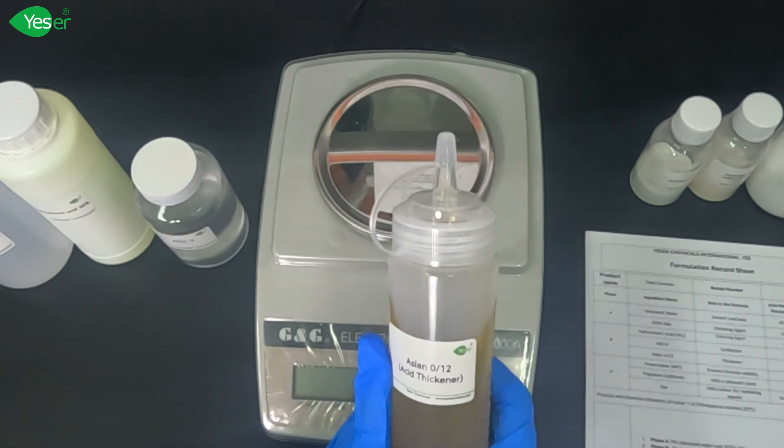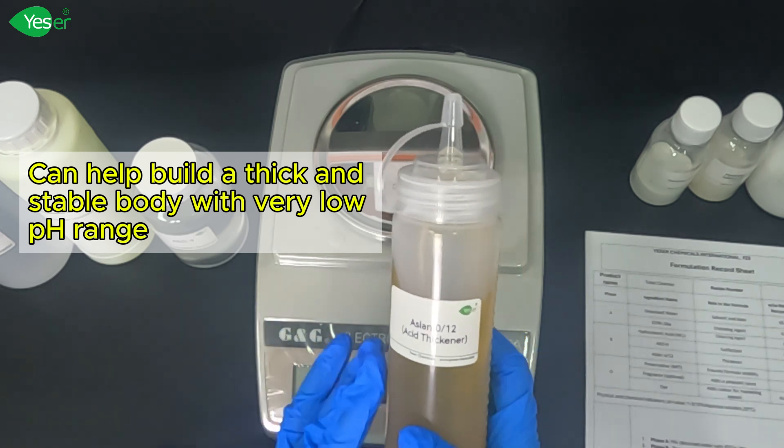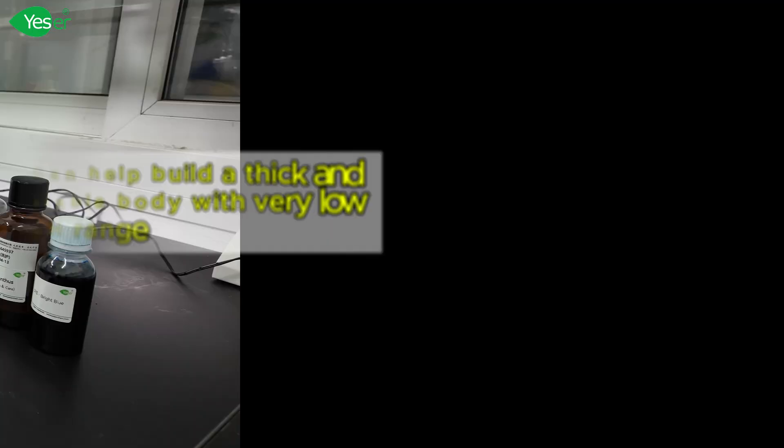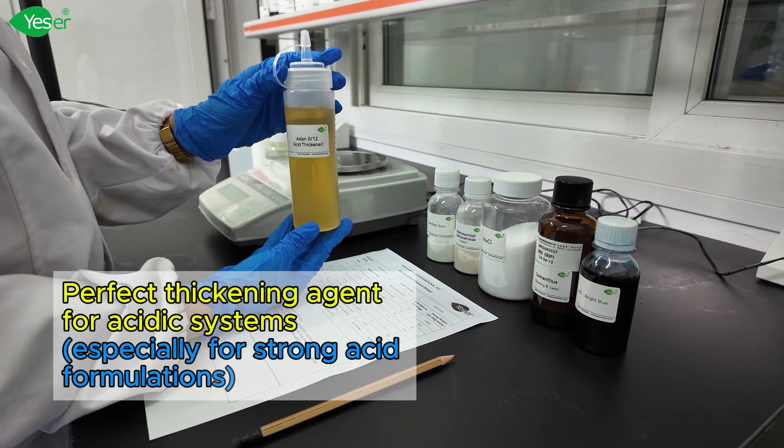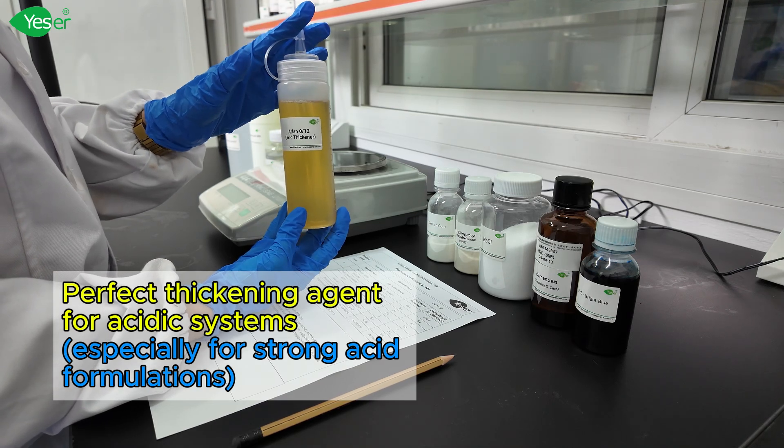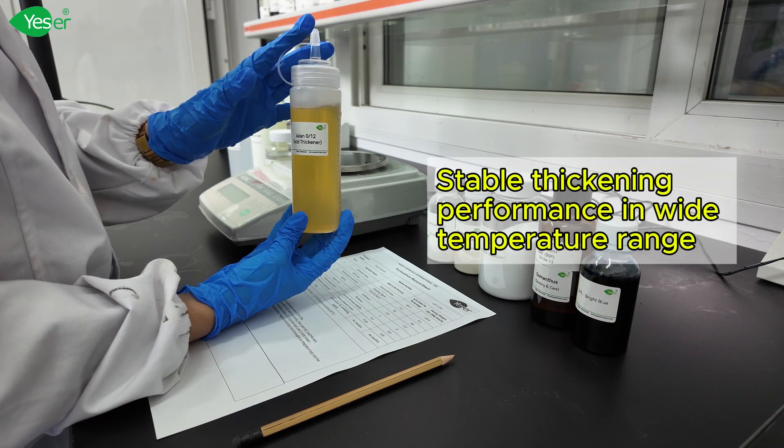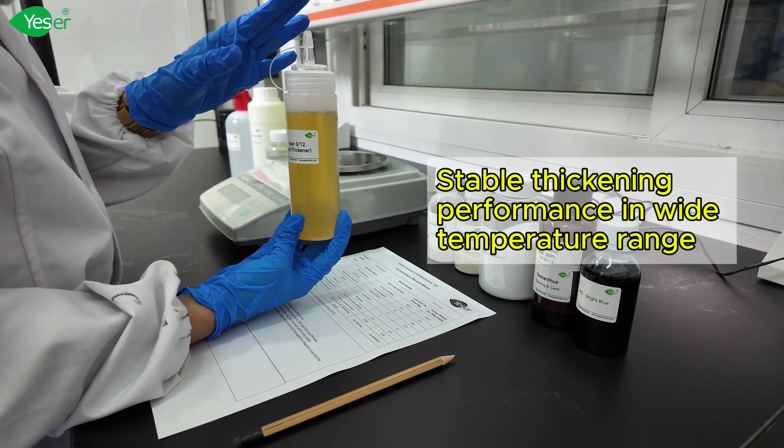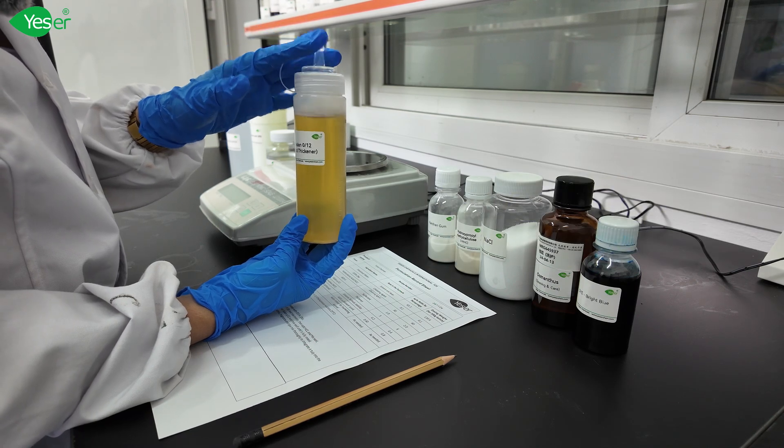Aslan 012 can help build a thick and stable body with a very low pH range, which is 1 to 3. The features and benefits of Aslan 012: this is a perfect thickening agent for acidic systems, especially for strong acid formulations, with stable thickening performance in a wide range of temperatures. The formation of jelly gel can be avoided at the right dosage with good wall-hanging properties.